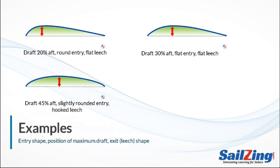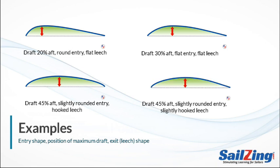The sail on the lower left has the maximum draft at 45% aft, with a slightly rounded entry. The leech is hooked or closed — hooked and closed mean the same thing. This drawing is exaggerated to show a really hooked leech; with battens in the sail you probably couldn't achieve this shape. Finally, the sail on the lower right also has maximum draft at 45% and a slightly rounded entry.